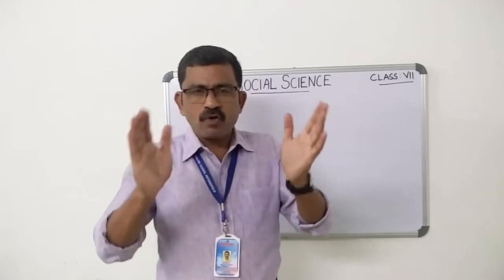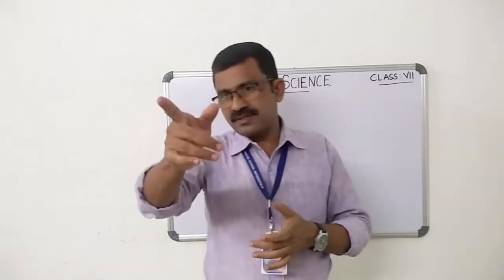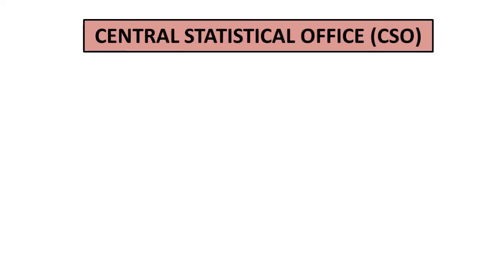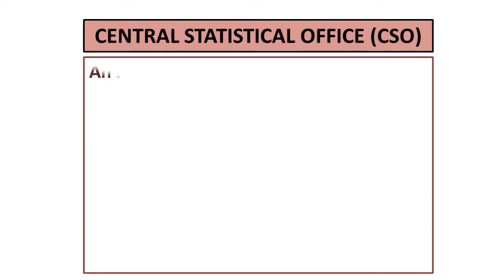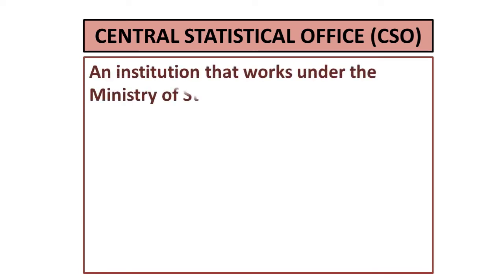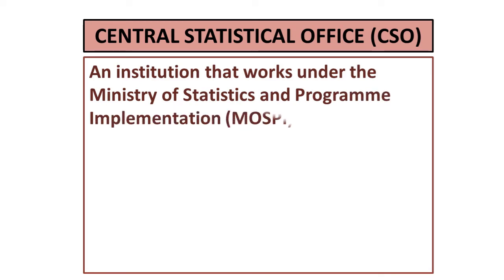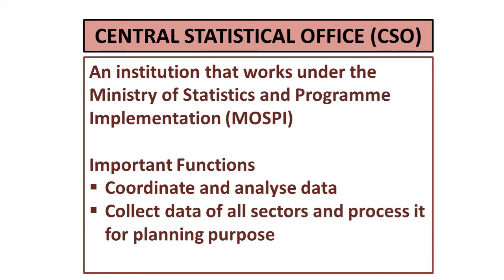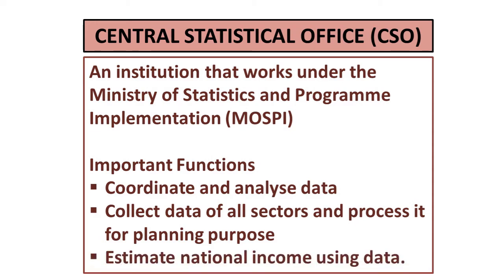There is a question for you: what is the expanded form of CSO? Central Statistical Office — very good. CSO is an institution that works under the Ministry of Statistics and Program Implementation. The important functions of CSO are to coordinate and analyze data, collect data of all sectors and process it for planning purposes, and to estimate national income using data.